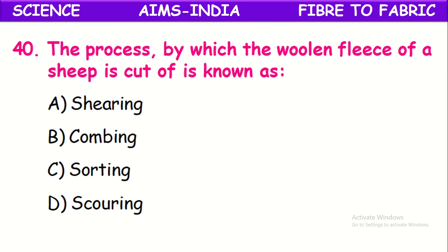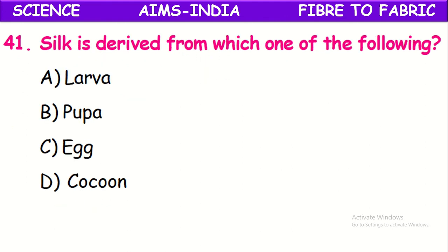The process by which the woolen fleece of a sheep is cut off is known as what? That process is called shearing. Shearing is the process in which the woolen fleece of sheep is cut off.